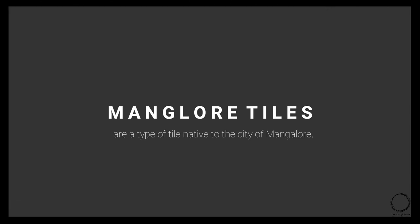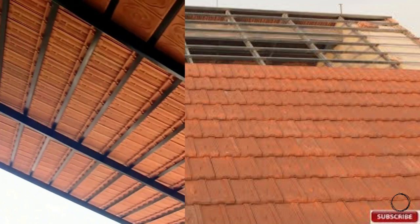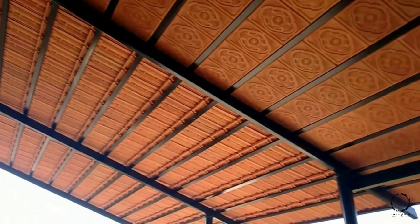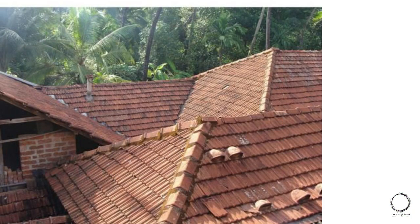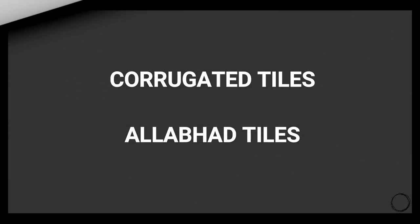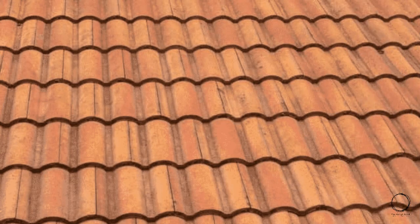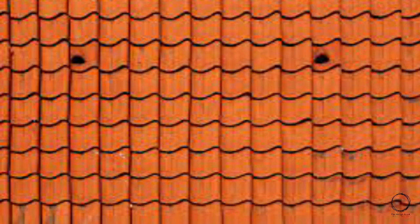Mangler tiles are native to the city of Mangalore. Historically laid with wooden purlins, steel frameworks are now used more due to increased wood costs. Roof tiles are laid from the bottom; they have a batten lug that locks with the purlins. They are corrosion resistant with superior longevity. Corrugated tiles and alabadi tiles are similar to mangler tiles in properties but have different designs and are native to their own cities.